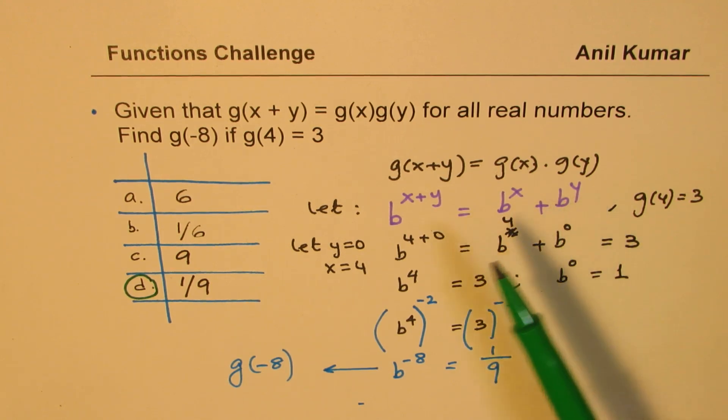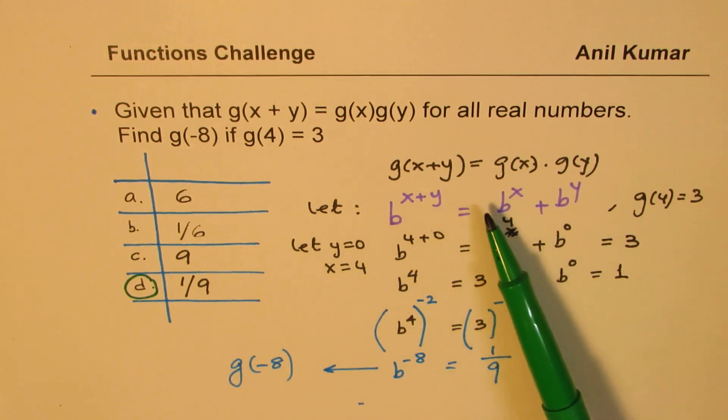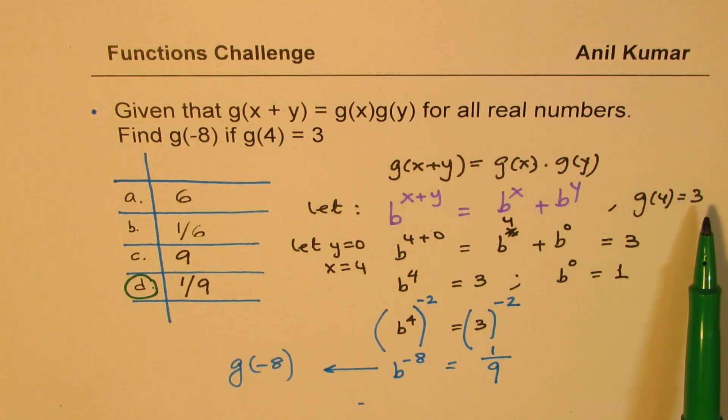Now, since we want the value of some number, like 8 minus 8 in this case, we know g of 4, we just took y as 0 to make the problem simpler, right? And so we got b to the power of 4. 8 is related with 4. And we use the exponential properties, taking both sides to the power of minus 2 to get our solution.